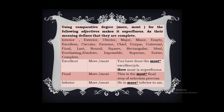Using comparative degree with certain adjectives is superfluous. These adjectives already carry absolute meaning: interior, exterior, ulterior, major, minor, empty, excellent, circular, extreme, chief, unique, universal, final, last, round, square, rectangular, ideal, everlasting, absolute, impossible, supreme, entire, complete. For example, we cannot say 'more excellent' or 'most excellent' — say only 'excellent.' We cannot say 'most final' — say 'this is the final step.' For inferior: 'He is inferior to me' — not 'more inferior.'